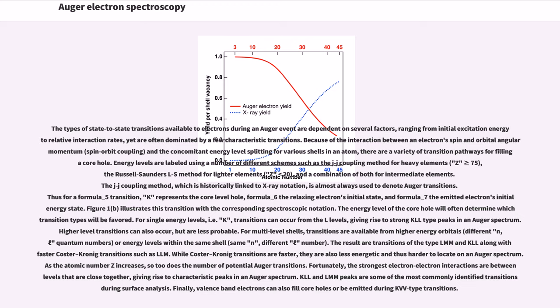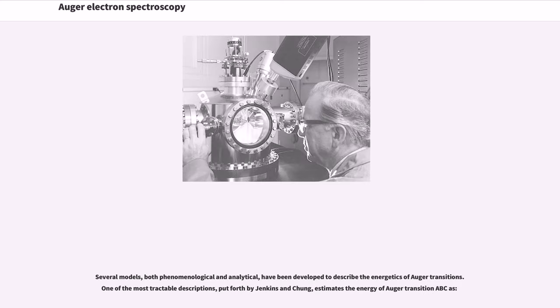KLL and LMM peaks are some of the most commonly identified transitions during surface analysis. Finally, valence band electrons can also fill core holes or be emitted during KVV-type transitions. Several models, both phenomenological and analytical, have been developed to describe the energetics of Auger transitions. One of the most tractable descriptions, put forth by Jenkins and Chung, estimates the energy of Auger transition ABC as